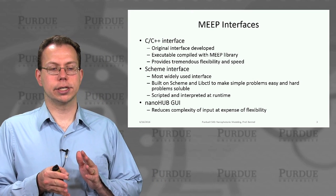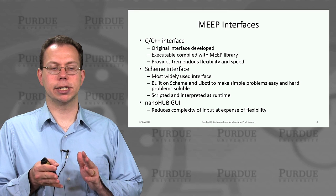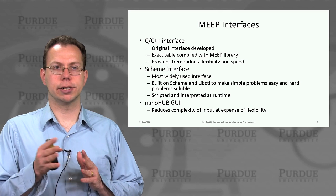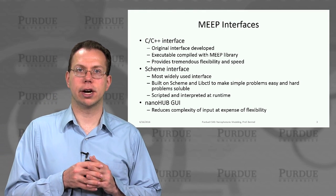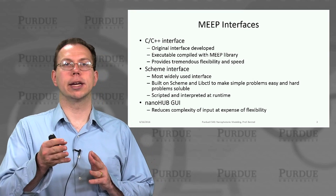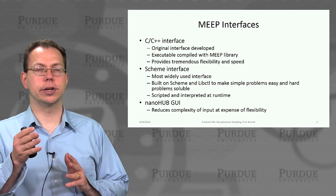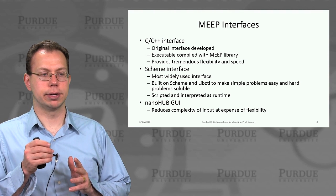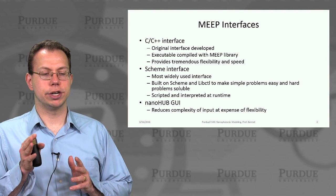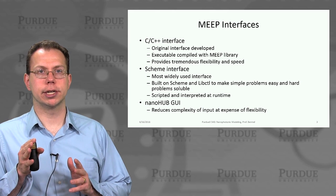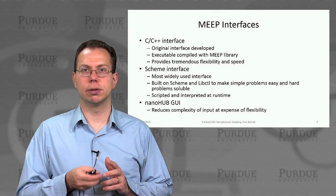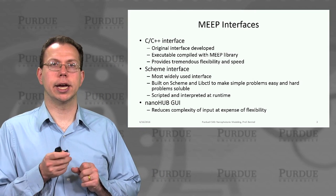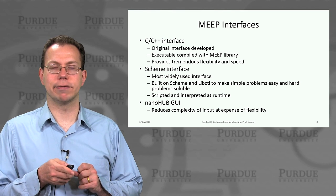The third interface is the Nanohub graphical user interface. The advantage is that it's probably the easiest to start with, because there are pre-programmed examples you can draw from. It's located at nanohub.org/tools/meep. It reduces the complexity of your input, though it's maybe not as flexible, but you can usually output the raw data — much like with S4SIM — if you need to process it further.